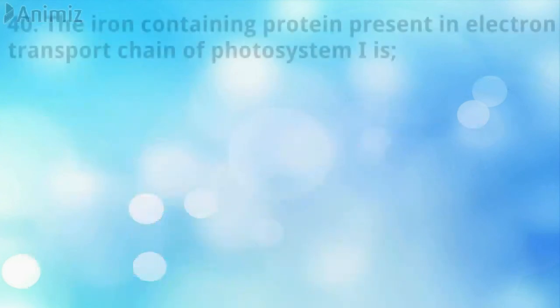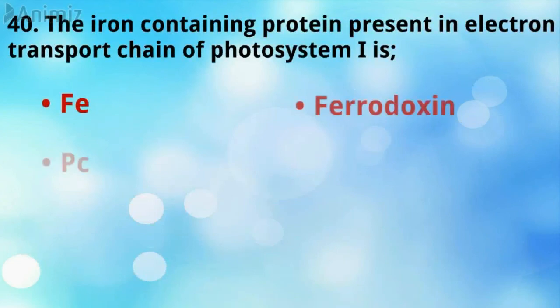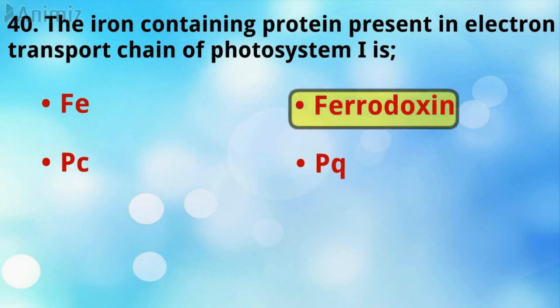The iron-containing protein present in the electron transport chain — one is ferredoxin.